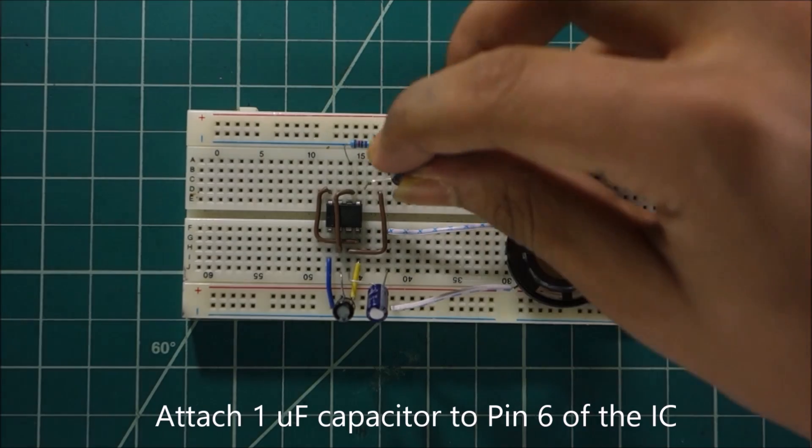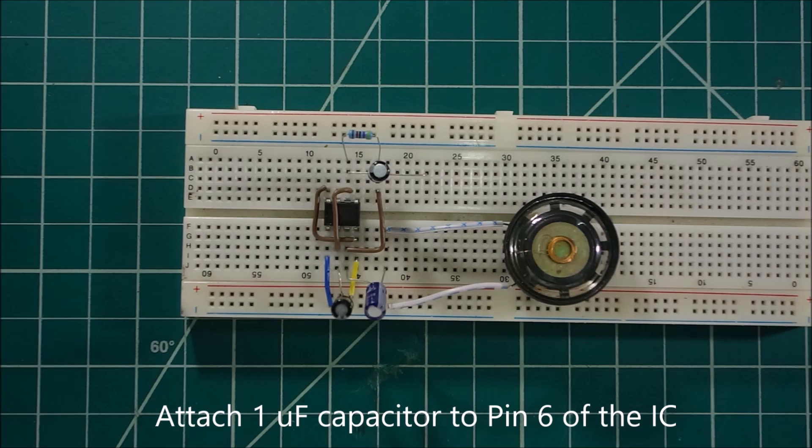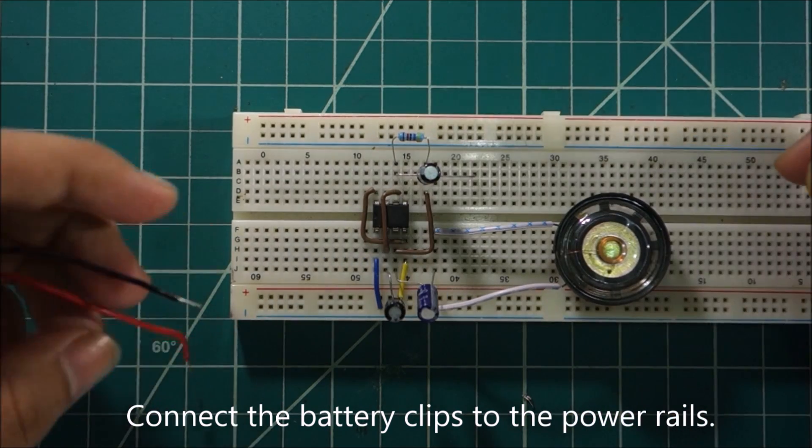Attach the one UF capacitor to pin 6 of the IC. Connect the battery clip leads to the power rails.